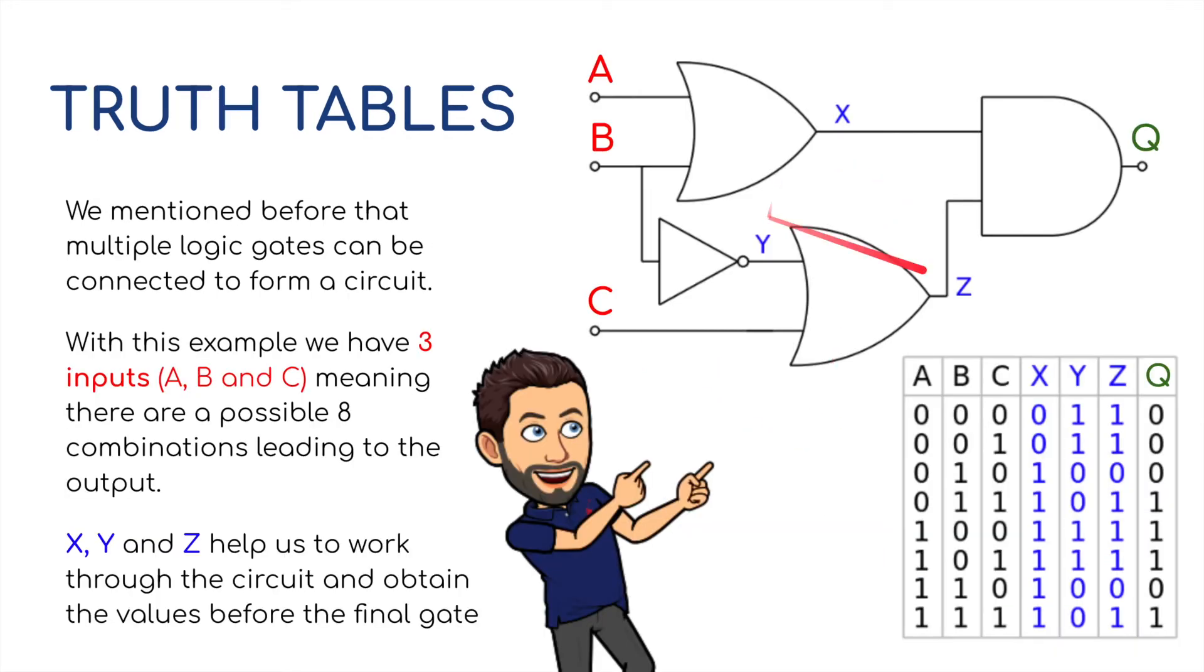So here I am and we've got a circuit here with four different gates. Well, two are the same. We've got two OR gates, a NOT gate, and an AND gate at the end. And we've got three inputs. We mentioned before that multiple logic gates can connect to form a logic circuit. As you can see here, in the example, we've got three inputs A, B, and C, meaning there are eight possible combinations.